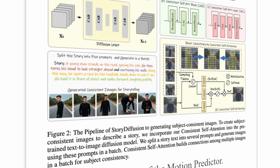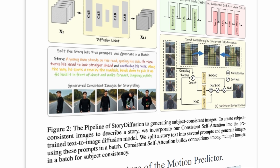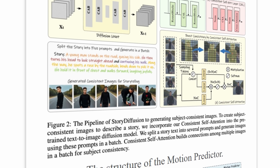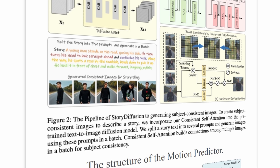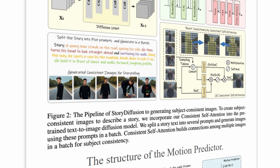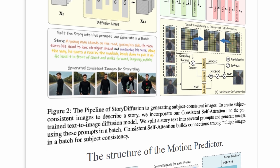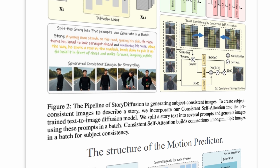By applying consistent self-attention across these batched images, it can maintain character consistency from one part of the story to the next. This allows Story Diffusion to generate long, multi-panel visual narratives and videos with seamless character consistency.